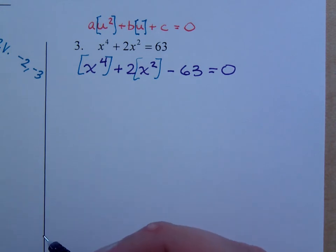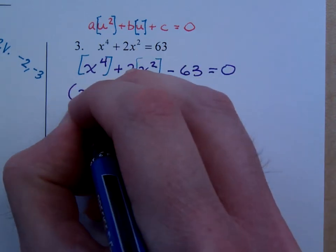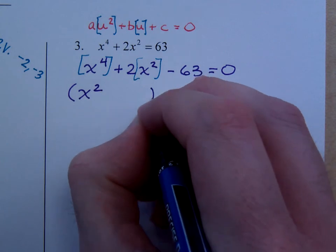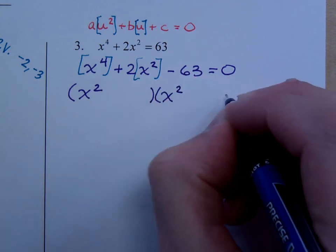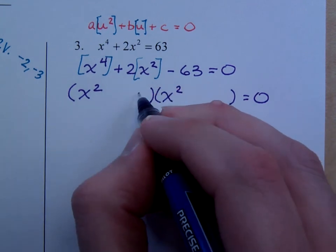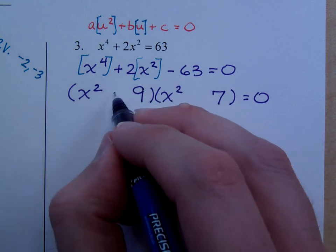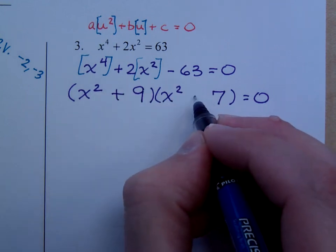Later on I'm going to do a u substitution, but right now we can just factor this guy. x to the 4th, I would expect to break down nicely and evenly as x squared and x squared. Factors of 63 that subtract to give you 2 would be 9 and 7. Since you need a positive 2, plus 9 and a minus 7.